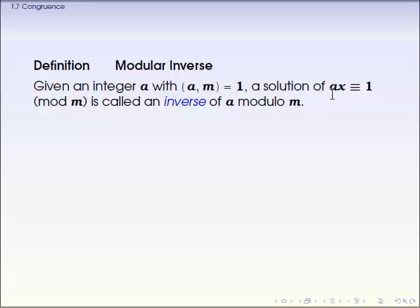And we should have a unique congruent solution for this equation, right? Because right now a and m are relatively prime, so we're expecting one congruence solution. And we call this an inverse of a modulo m.